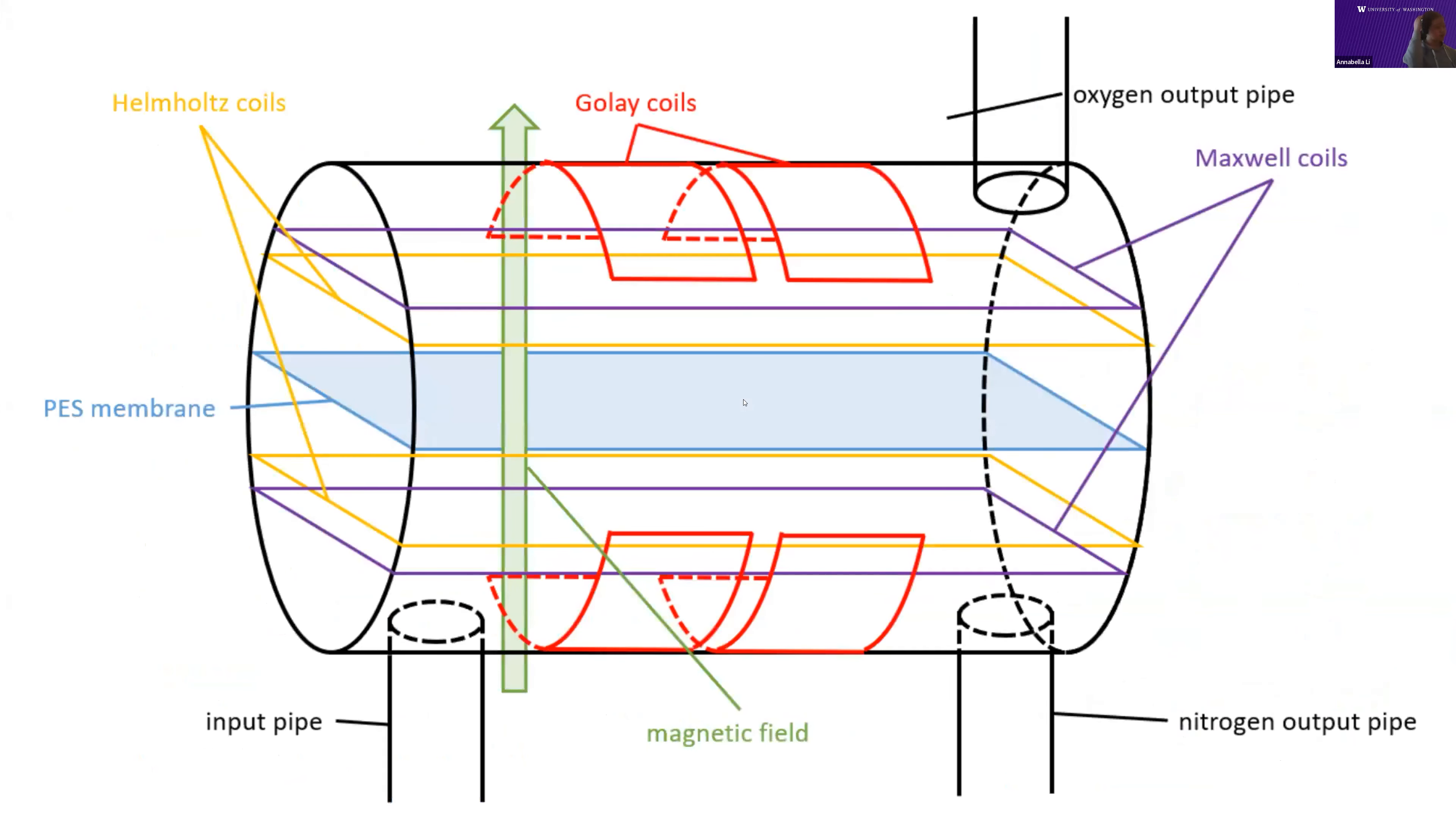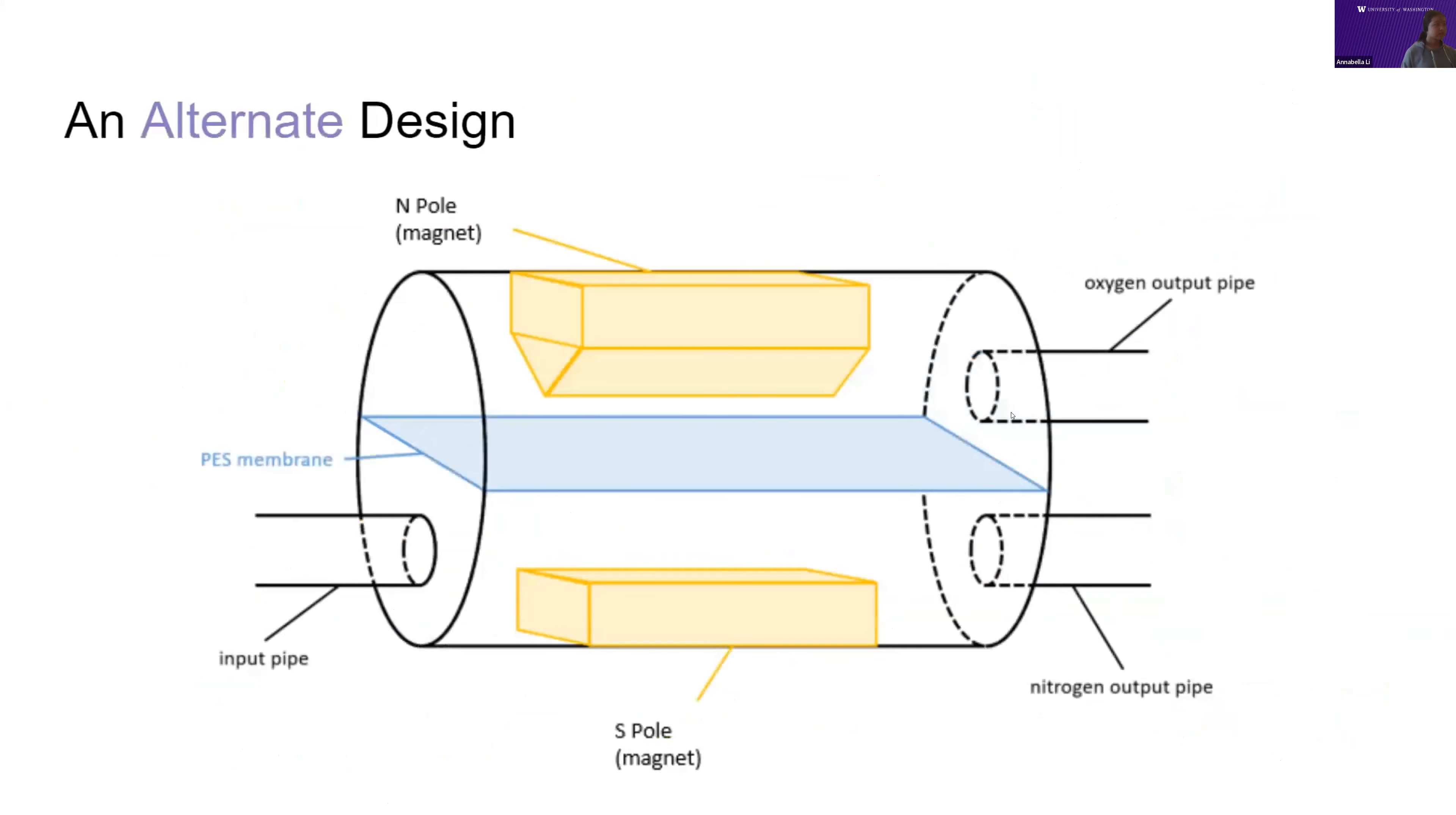Here's a diagram of what the coils would look like on our design. Because we weren't able to do actual experimentation with our device, we also included an alternate design to create a magnetic gradient using permanent magnets instead of electromagnets.